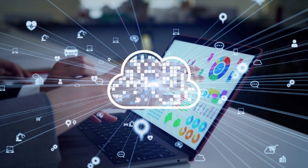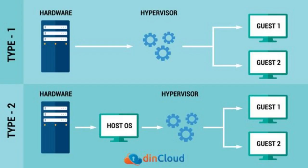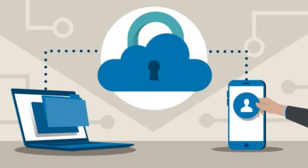The second type is the Type 2 hypervisor, also called a hosted hypervisor. Type 2 hypervisors run on top of an existing operating system, turning it into a platform for virtualization. They are easier to set up and can run on a variety of host operating systems; however, they are not as fast as Type 1 hypervisors. Examples include VMware Workstation and Oracle VirtualBox.